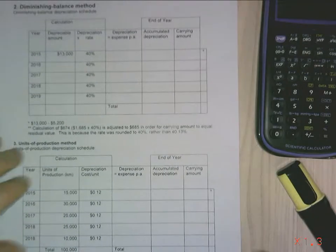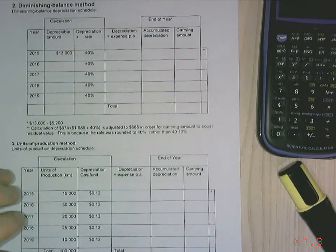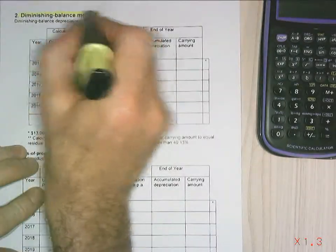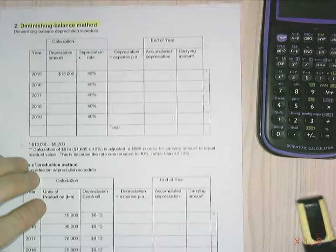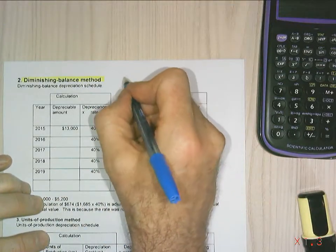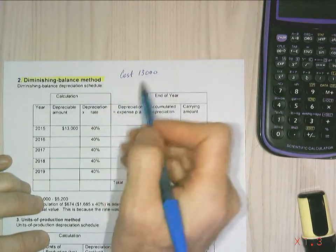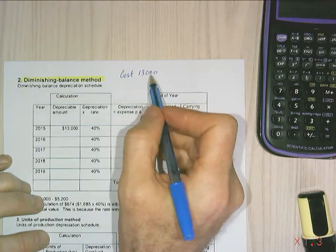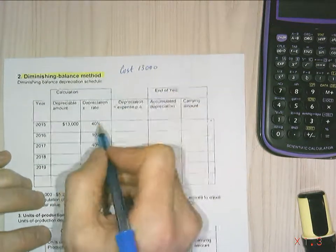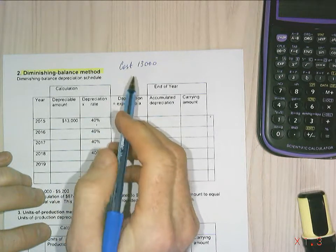All right, let's go on to the second method, which is the diminishing balance method. We've got our diminishing balance method. And this is a slightly different method. We're going to use the same number, so my cost is $13,000. And we're going to try and come back to a residual value of about $1,000. But my depreciation rate will be twice that of straight line method. My straight line method was 20%. We're going to make this one 40%.